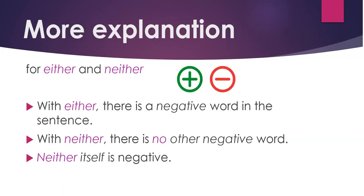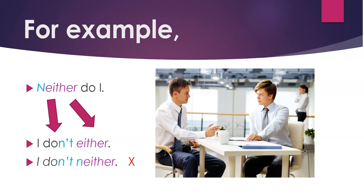More explanation for either and neither. With either, there is a negative word in the sentence. With neither, there is no other negative word — neither itself is negative. When using either, it's like taking the N off neither and putting it on another word in the sentence. For example: Neither do I. I don't either. Do not say I don't neither — that's a double negative, and it's not good.